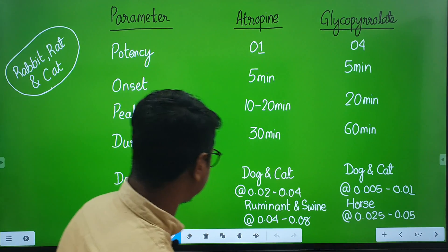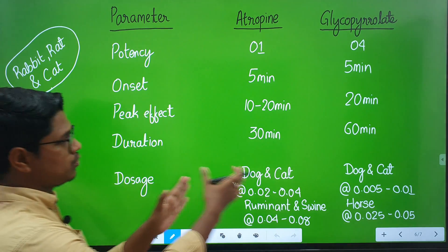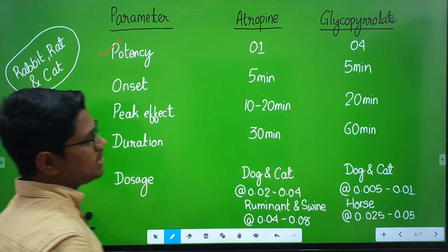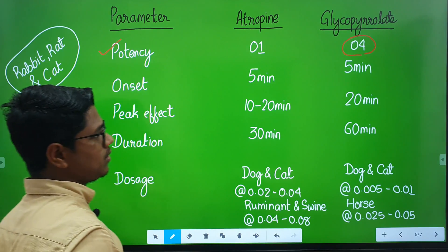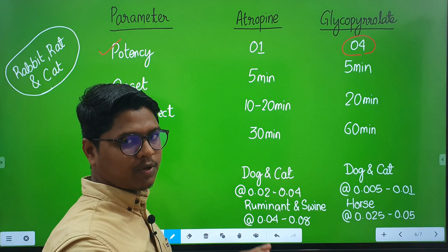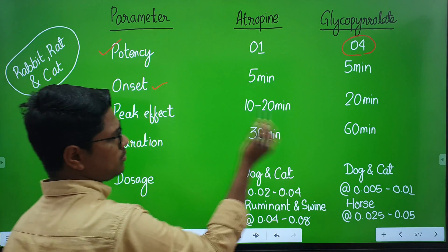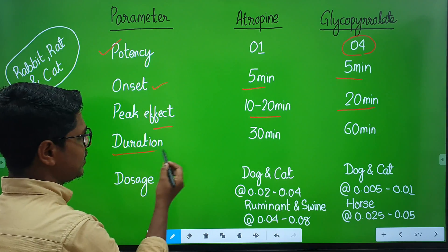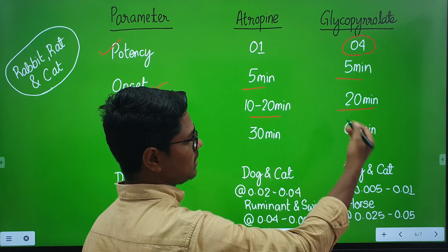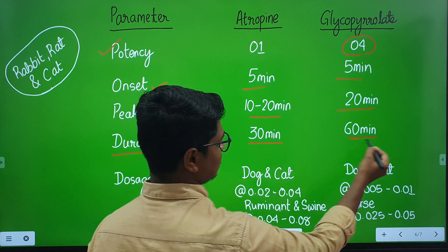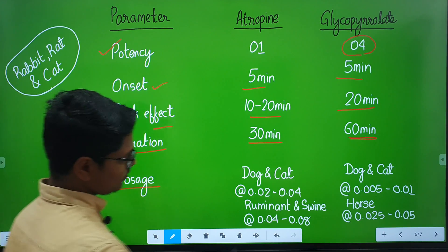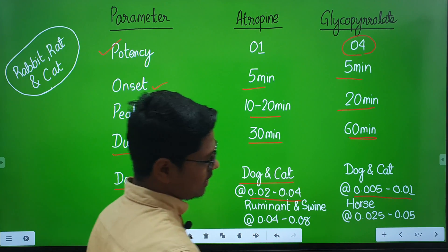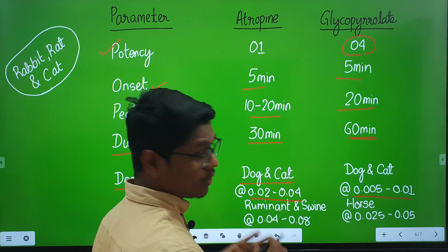Next, pharmacokinetics. We will compare the two drugs — atropine and glycopyrrolate. First, potency: glycopyrrolate is four times more potent than atropine. Potency means under a lesser dose, we produce the same pharmacological effect. Onset of action is usually the same — within five minutes. Peak effect is also within 20 minutes: 10 to 20 minutes for atropine and 20 minutes for glycopyrrolate. Duration of action: glycopyrrolate is usually more — 60 minutes versus 30 minutes. Dosage in dog and cat: atropine 0.02–0.04 mg/kg, glycopyrrolate 0.005–0.01 mg/kg — that is four times less, which is why glycopyrrolate is four times more potent.